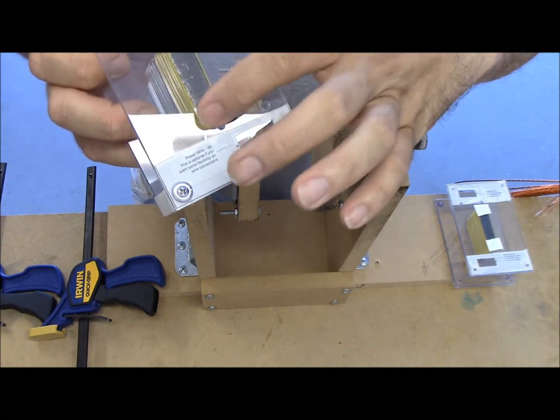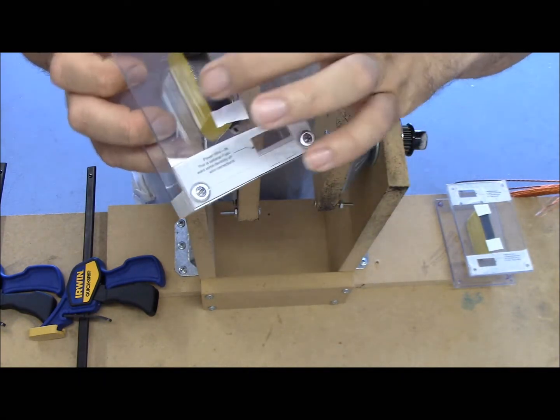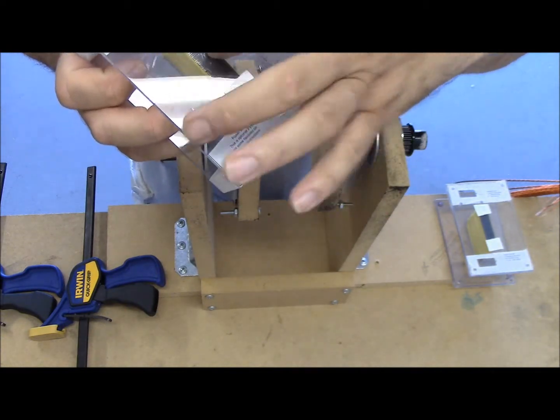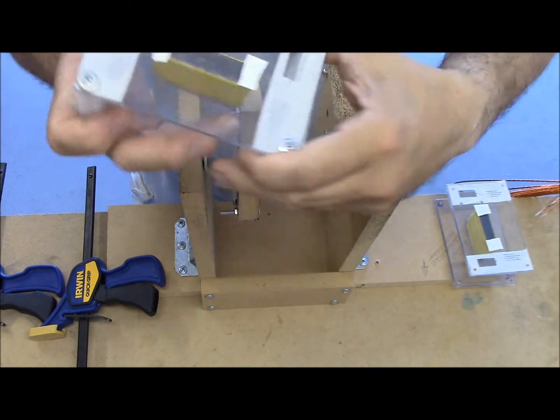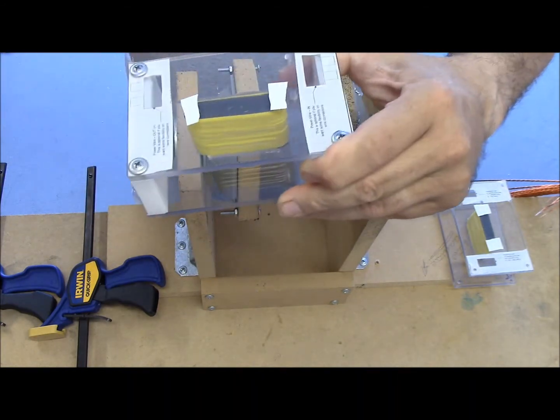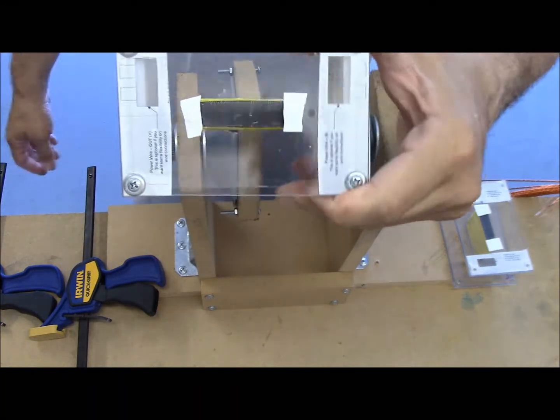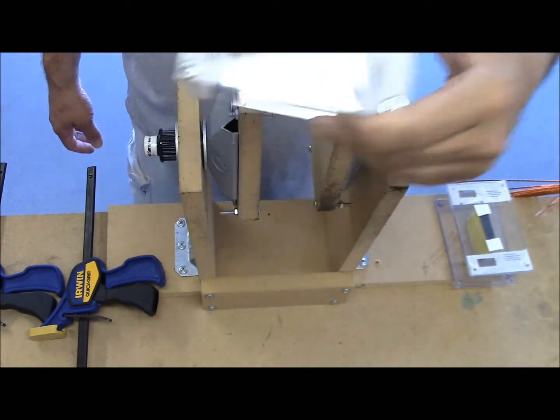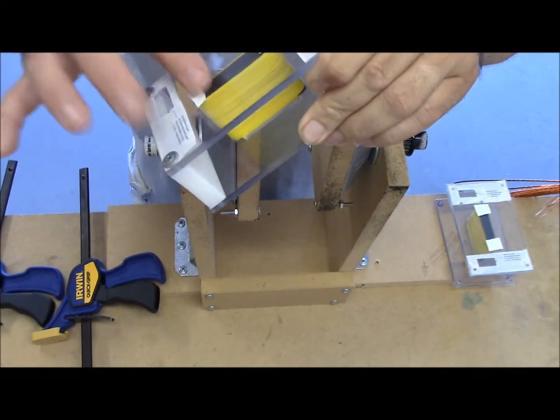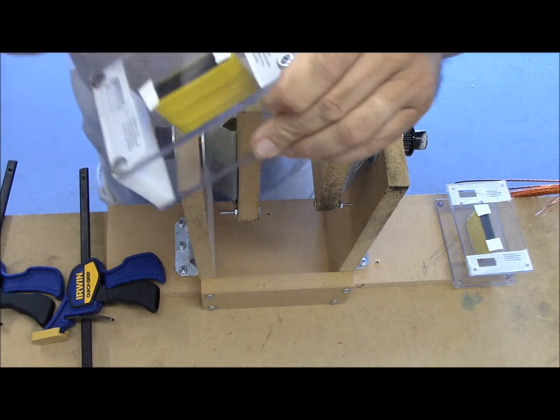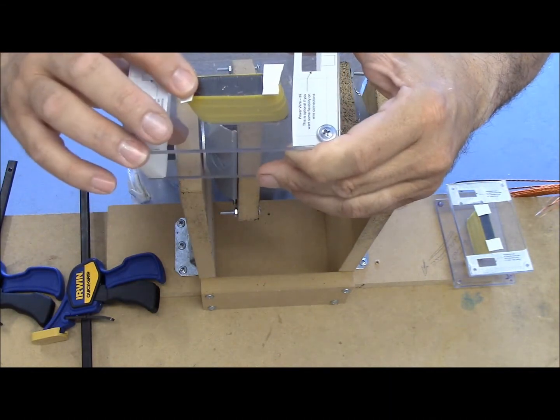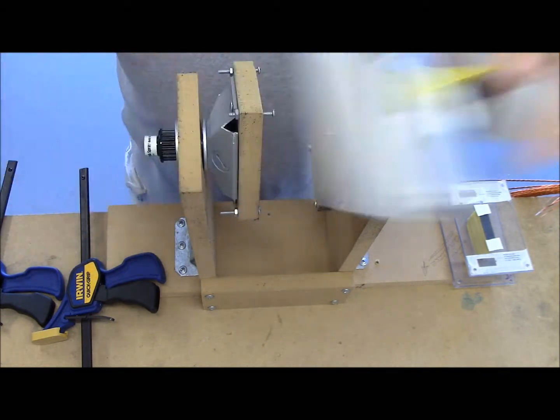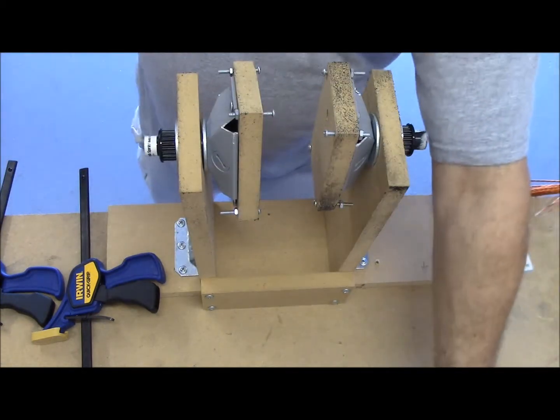One little note - I went ahead and put some white tape on these screws here. I didn't want anything coming back up into the coil when I put the control board on this side to avoid power shorts or anything like that. So I put tape on the screws that are going to be pointing up to the back of the control board. That's the front side right there.